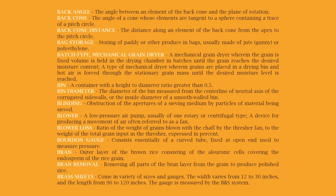Bin: a container with a height-to-diameter ratio greater than 0.5. Bin diameter: the diameter of the bin measured from the center line or neutral axis of the corrugated sidewalls, or the inside diameter of a smooth-walled bin. Blinding: obstruction of the apertures of a sieving medium by particles of material being sieved. Blower: a low-pressure air pump, usually of rotary or centrifugal type; a device for producing movement of air, often referred to as a fan.